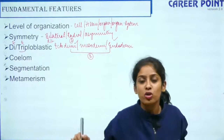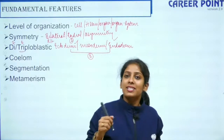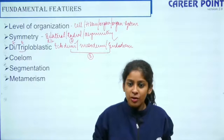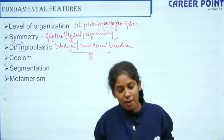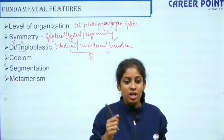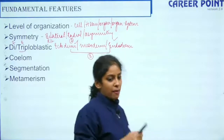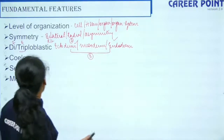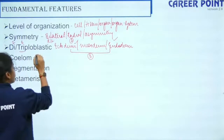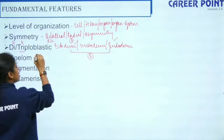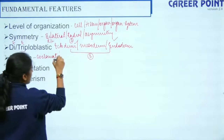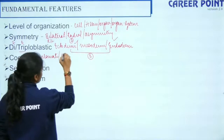If you have only ectoderm and endoderm, it is diploblastic — in that case you have what is called mesoglea, which is undifferentiated mesoderm. The fourth point is coelom. Coelom is the body cavity. If the organism has a coelom it is coelomate; otherwise it is acoelomate.